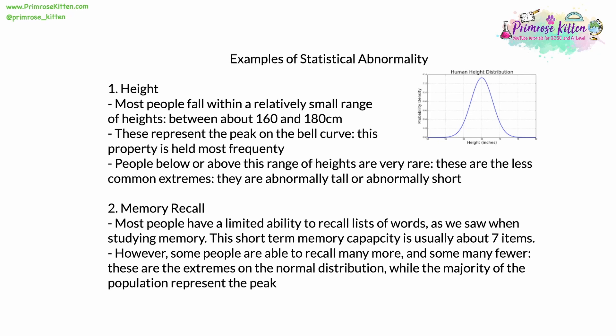A second example is memory and recall. Most people have a limited ability to recall lists of words — short-term memory capacity is usually about 7 items, give or take, giving a range of maybe 5 to 9. However, some people can recall many more — 11, 12, 15, even more — and some can only recall 2, 3, or 4. These extremes fall at the far left or far right of the normal distribution, while the majority in the middle is much more frequent, making the curve higher there.